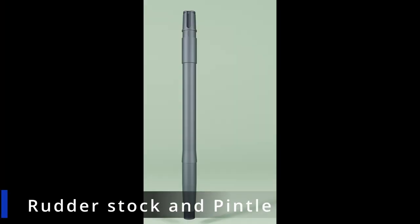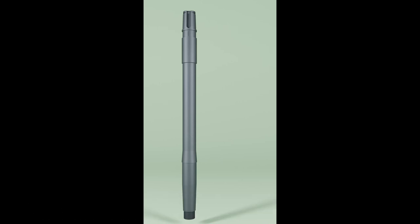Let's now look at the rudder stock. Rudder stock transmits the torque from the tiller to the rudder thereby turning it to the required angle.